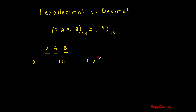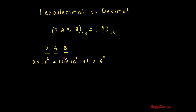So I write: 11 into 16 to the power 0, plus 10 into 16 to the power 1, plus 2 into 16 to the power 2. This is the expression for the integer part that I need to solve.